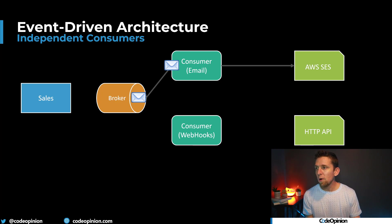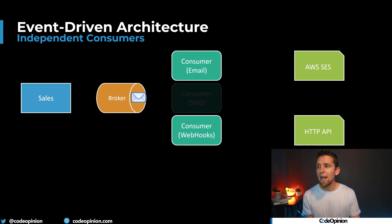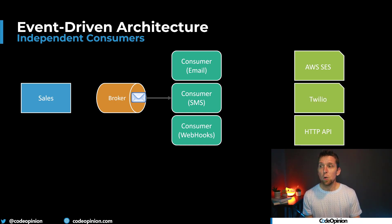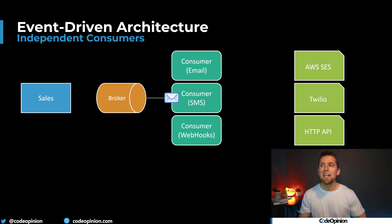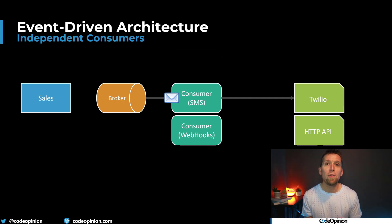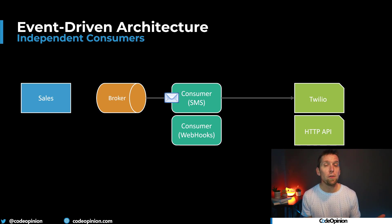Later on we may decide we want to add more functionality — maybe we want to send an SMS. We can add that existing functionality, making our system more capable. We can also decide we don't want to do email anymore and just remove that consumer. These consumers have no bearing on other consumers — they're independent.